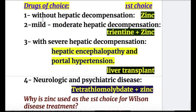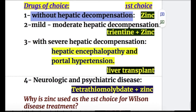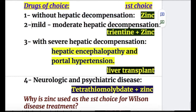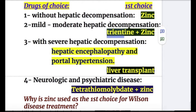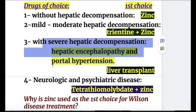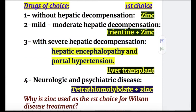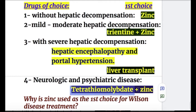The drug of choice varies by stage: without hepatic decompensation, zinc is first choice. In mild to moderate hepatic decompensation, trientine plus zinc. With severe hepatic decompensation — causing hepatic encephalopathy and portal hypertension — the treatment is liver transplantation. For neurologic and psychiatric disease, tetrathiomolybdate plus zinc.